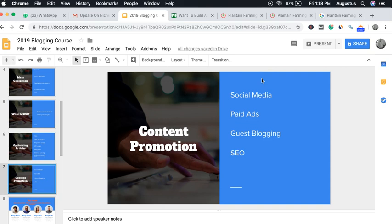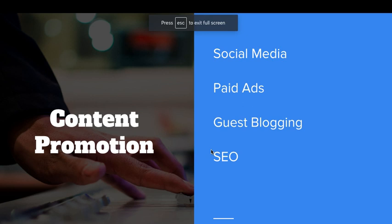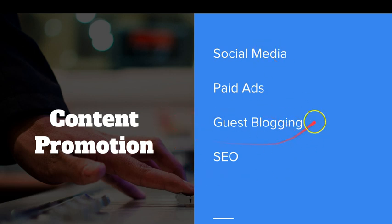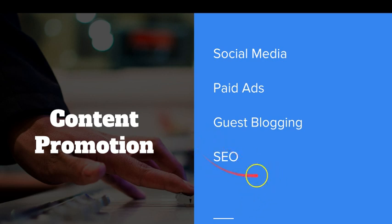The last part of this episode is about content promotion. The reality is people are not waiting for you to publish your post so they can come and read it — you have to go find them wherever they are and literally drag them to your site. You have to find people where they are. Most of the time people online are either on social media, or you pay to have your post shown on social media, or you do guest blogging, or you rank using SEO. SEO takes four to six months before you start getting traction.